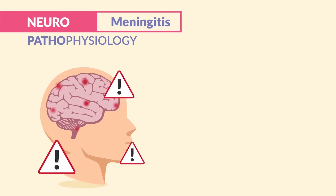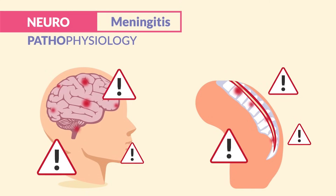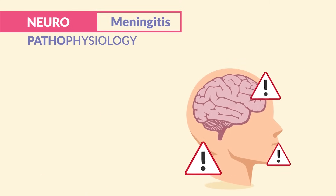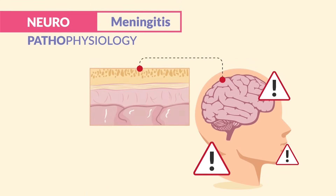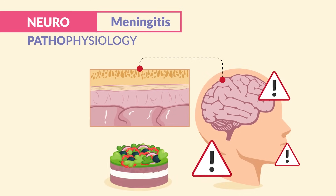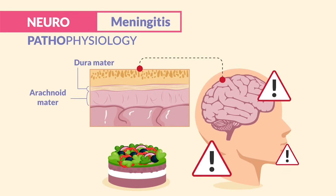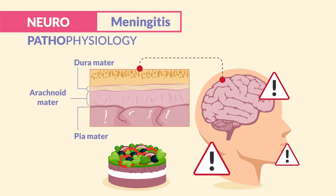Meningitis is the inflammation of the meninges, which is the inner lining of the brain and spinal cord. The meninges are comprised of three layers, sort of like a bean dip. We have the dura mater, the arachnoid mater, and the pia mater.